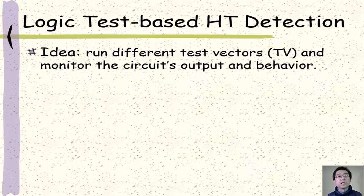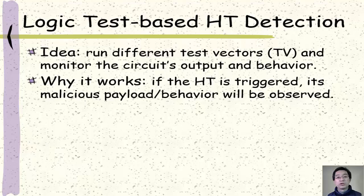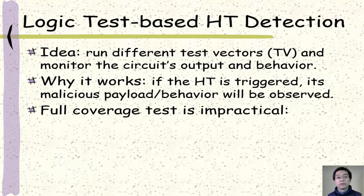In the logical test based hardware trojan detection, we run different test patterns or test vectors and monitor the system's output and behavior. If the system has a hardware trojan, when the trojan is activated, its malicious behavior or malicious payload will be observed and can be caught. However, a full coverage test is impractical for a reasonable size of circuit.